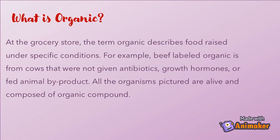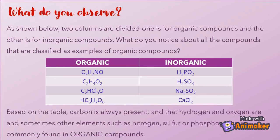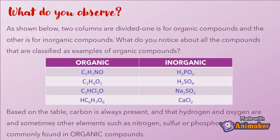At the grocery store, the term organic describes food raised under specific conditions. For example, beef labeled organic is from cows that were not given antibiotics, growth hormones, or fed animal by-products. All the organisms pictured are alive and composed of organic compounds, as shown in the table below divided into organic compounds and inorganic compounds.